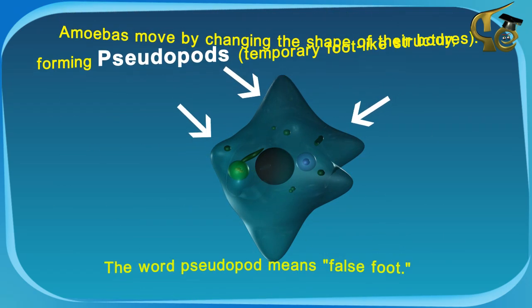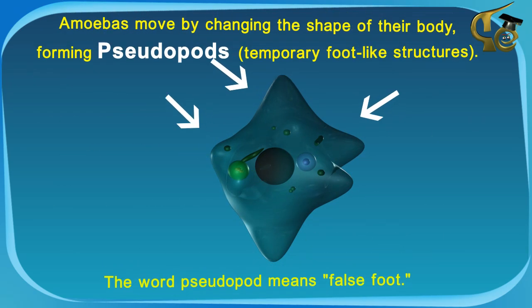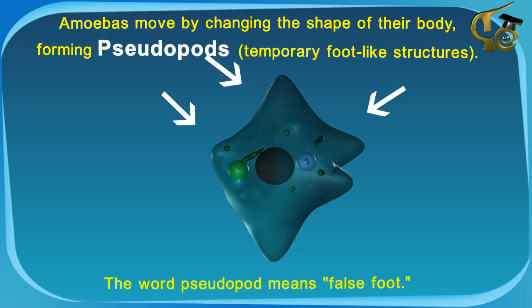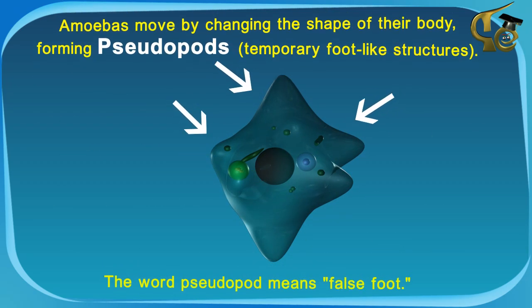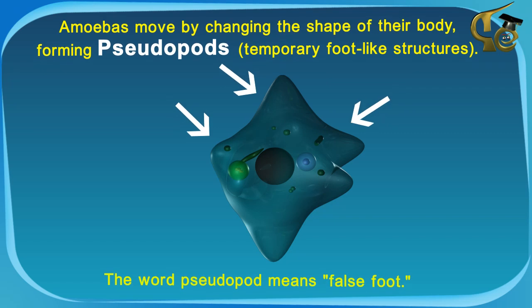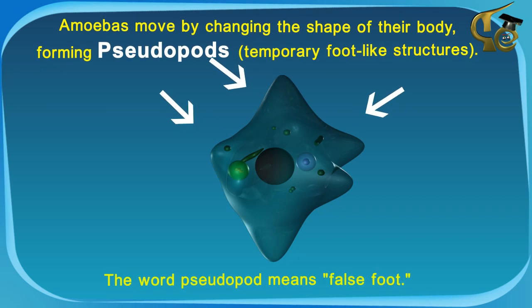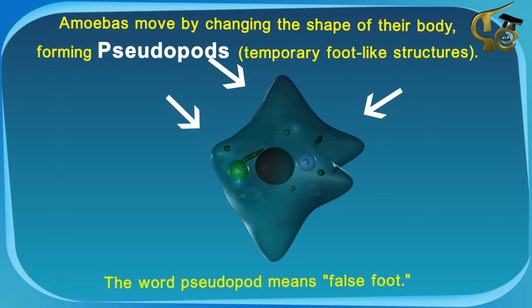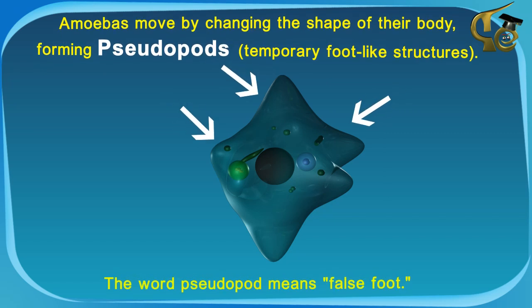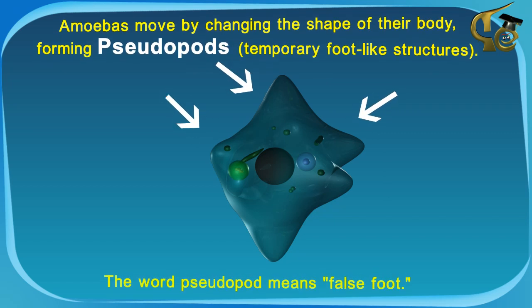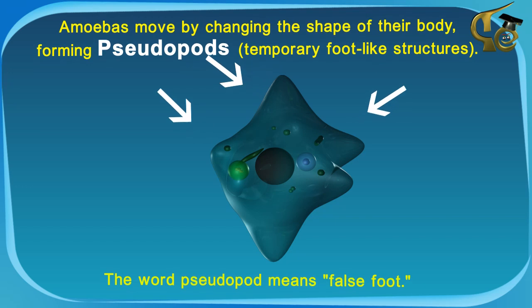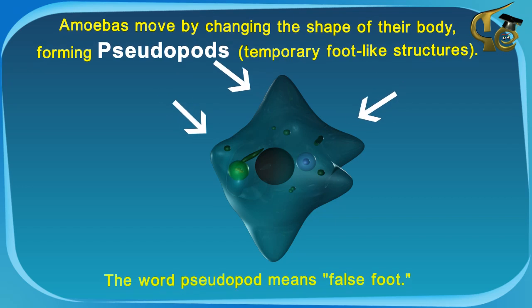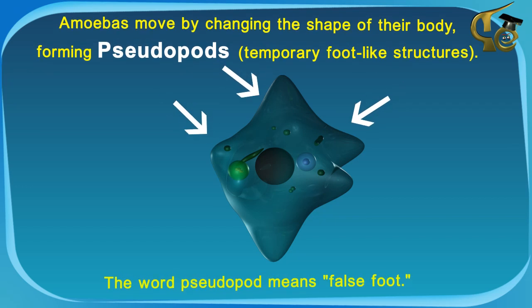Amoebas move by changing the shape of their body, forming pseudopods, which are temporary foot-like structures. The word pseudopod means false foot.